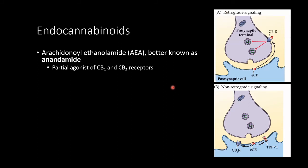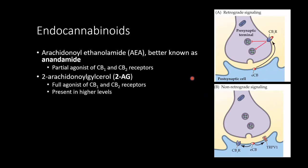Speaking of retrograde messengers, let's talk about endocannabinoids. AEA, also known as anandamide, is a partial agonist of CB1 and CB2 receptors. CB1 and CB2 are just the subtypes of cannabinoid receptor. A partial agonist activates the receptor to a lesser degree than a full agonist would. There also exists 2AG, which is a full agonist of CB1 and CB2 receptors. It's present at higher levels and is the more common signaling mechanism.